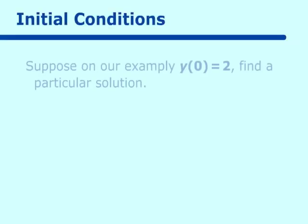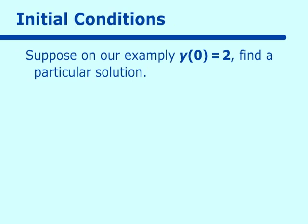Now suppose we are given the initial condition y(0) = 2 and need to find a particular solution, which means we evaluate c. Substituting into y = e^c · e^(x²/2), we get 2 = e^c · e^0 = e^c · 1, so e^c = 2. Therefore our final answer is y = 2e^(x²/2).